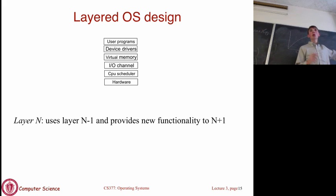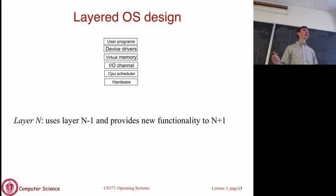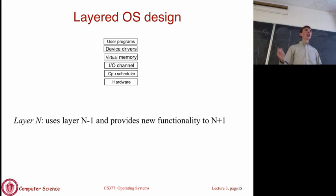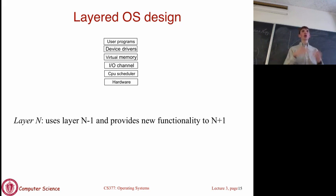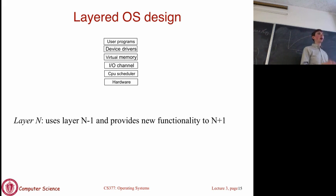Most OSes don't really use the strict layered design. With one large exception—the network stack. The TCP/IP protocol stack is designed almost exactly like this: the physical layer at the bottom, the link layer above it, then network, transport, and application layers. The networking stack of almost every machine is exactly this—a set of layers where each only talks to the one beneath and above it. That's arguably the one big success of the layered OS design.